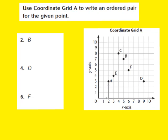For question 2, they want us to locate where point B is on the coordinate grid. I locate point B right here and I'll circle it so it stands out. My first step is to move from the origin, 0, 0, across the x-axis: 1, 2, 3, 4, 5. I can stop at 5 because when I look up, B is located at 5 on the x-axis. So I write down 5 as my x-coordinate.